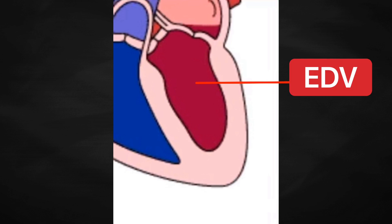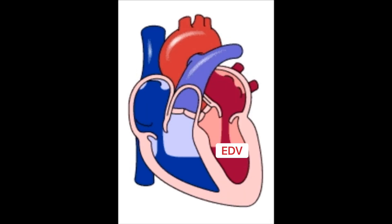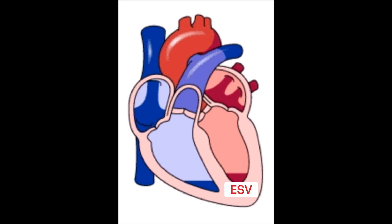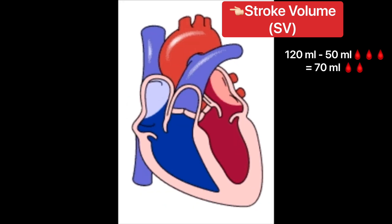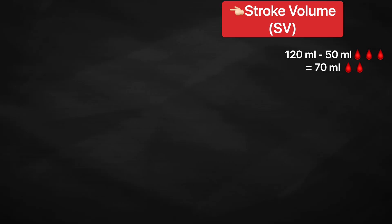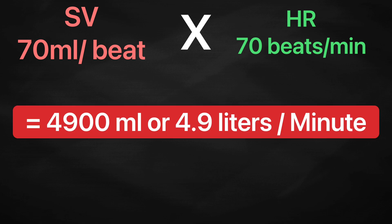The difference between end-diastolic volume and end-systolic volume is your stroke volume. Therefore, end-diastolic volume minus end-systolic volume gives us the stroke volume — the volume of blood that the left ventricle ejects with every heartbeat or stroke. In this case, the stroke volume is 120 ml minus 50 ml, which equals 70 ml. Given this stroke volume and a normal heart rate of 70 beats per minute gives you a cardiac output of 4.9 liters per minute.